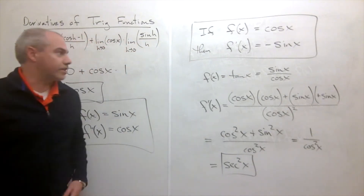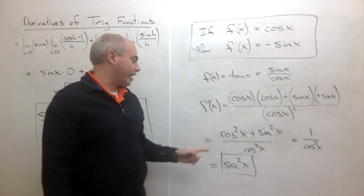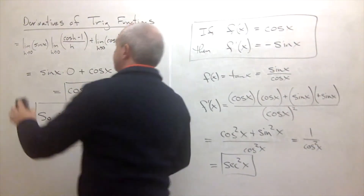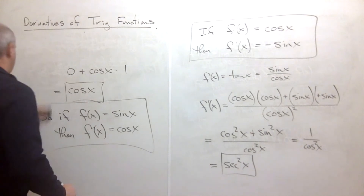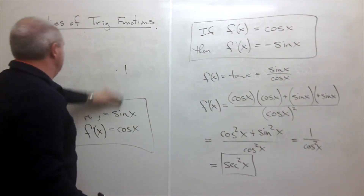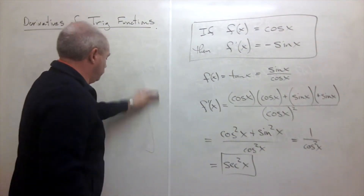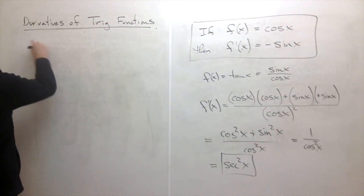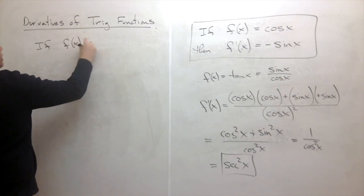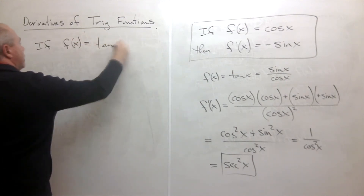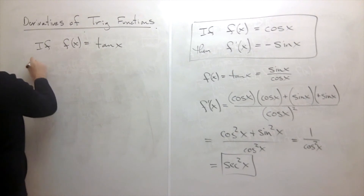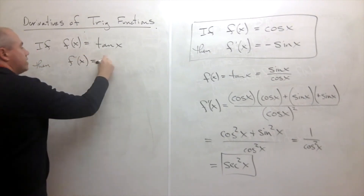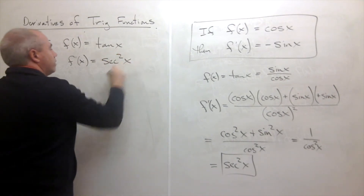Since one over cosine of x is secant of x, we can write this as secant squared of x. So if f of x is equal to tangent of x, then f prime of x is equal to secant squared of x.